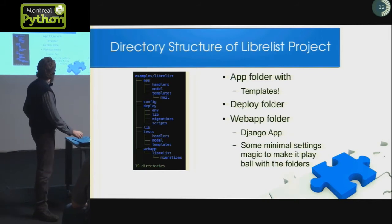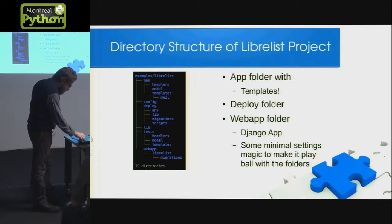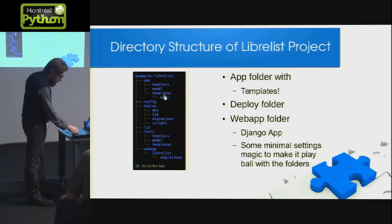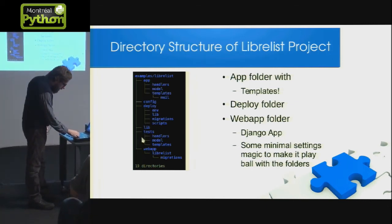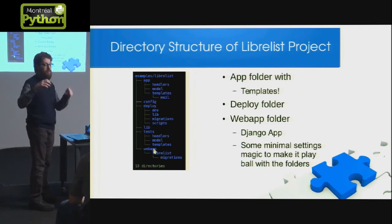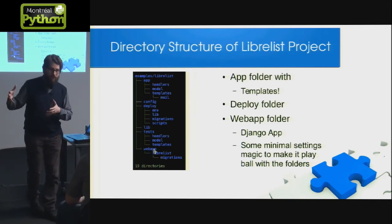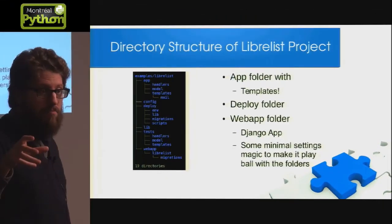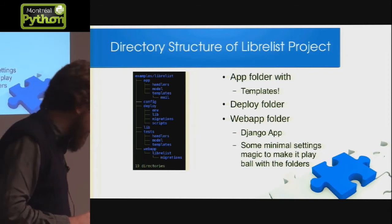C'est la structure de répertoire du projet. Il y a les models, les templates, et aussi un répertoire web app, qui est un répertoire normal de Django. Et pour faire Django travailler bien avec Lamson, il y a simplement besoin de changer un peu les modules settings — et depuis, ils marchent sans problème.